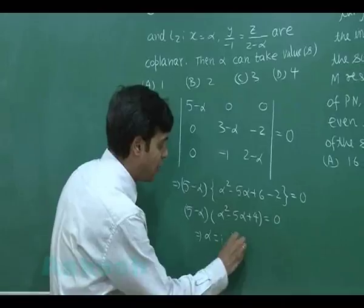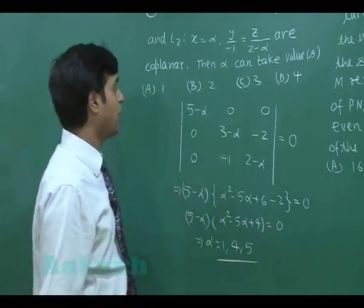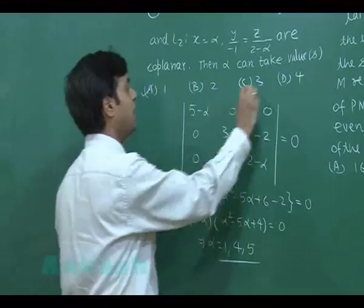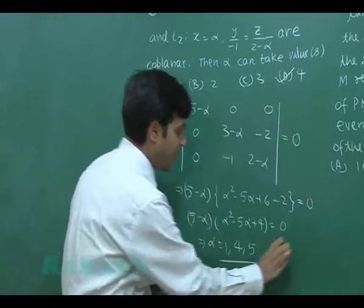We get the values for alpha as 1, 4, and 5. From the given options, we clearly see 1 and 4 are there, so correct answers are A and D.